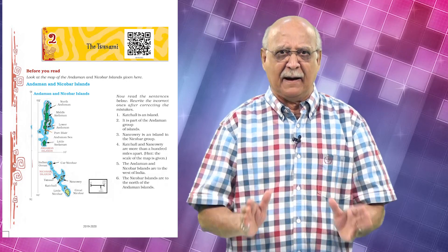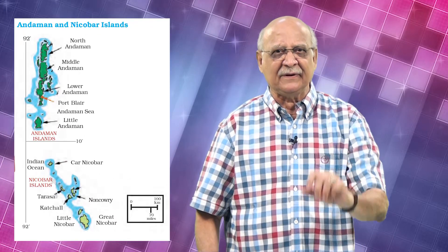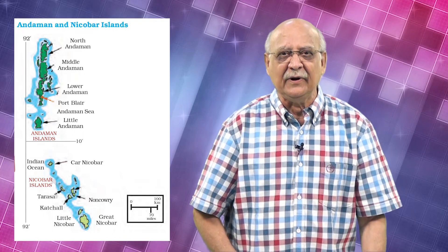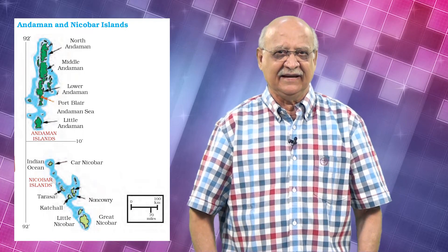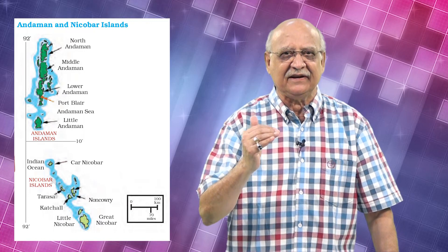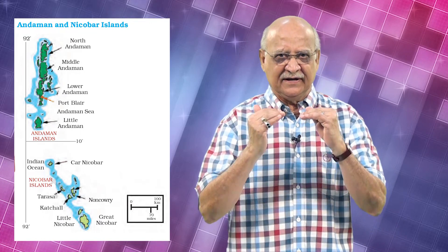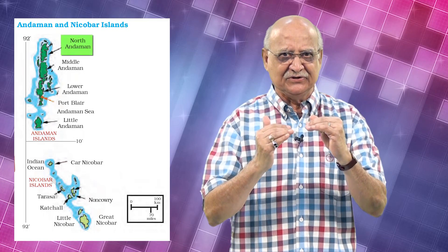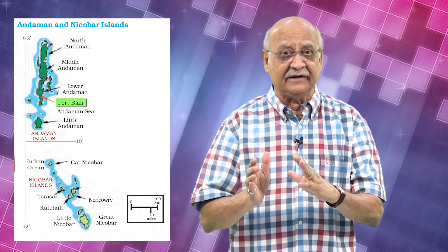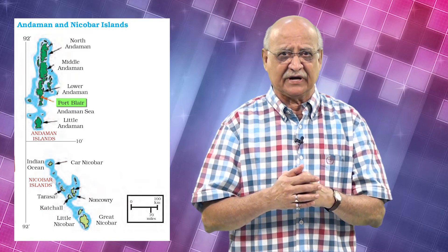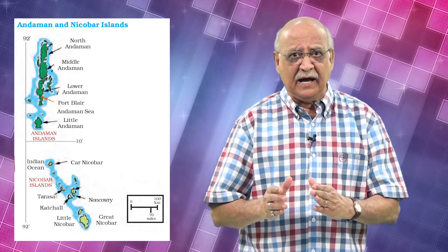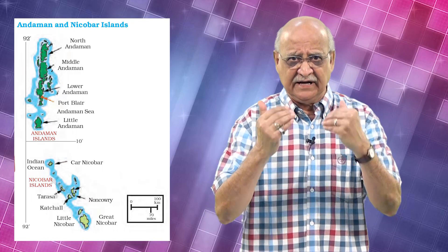Look at page 24 where you have a map in your book. That's the map of our own Andaman and Nicobar Islands. Can you read the places mentioned there? Right from the top: North Andamans, Middle Andamans, South Andamans, and in between you also find Port Blair, which is the capital of the Andaman and Nicobar Islands. So we have seen the map and we have read the map.